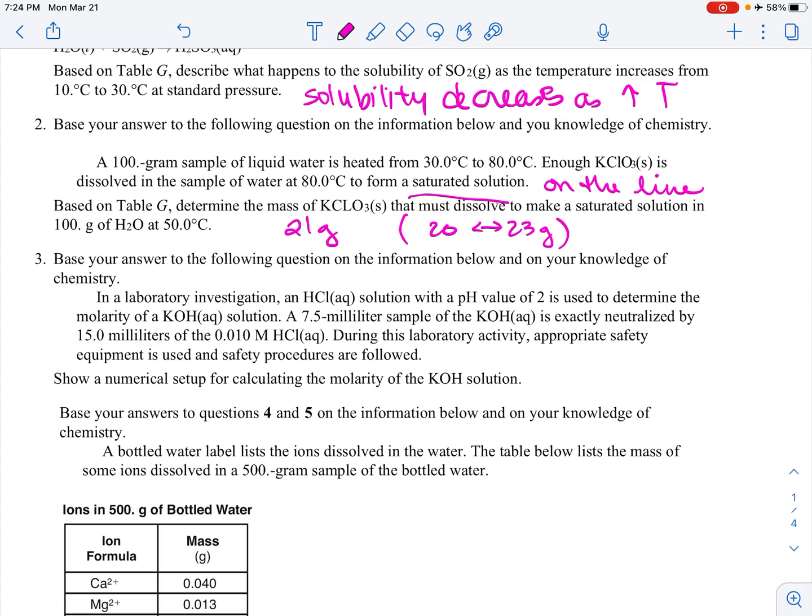Okay, in a lab investigation, an HCl solution, let's see, we can't do this one. This is acid base. Well, anyways, I guess we could. This is a molarity by titration question. MAVA equals MBVB. This was not meant to be on my solutions review. It's supposed to be acid base review. But you would do that by saying, okay, the molarity of the acid is 0.010, the volume of the acid is 15, the molarity of the base is what I'm looking for, and the volume of the base is 7.5. So you would just do that math. But again, this is acid base, not solutions.